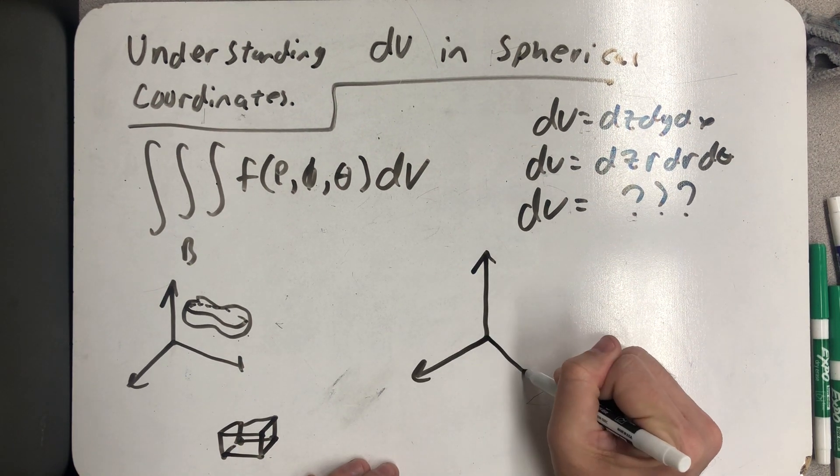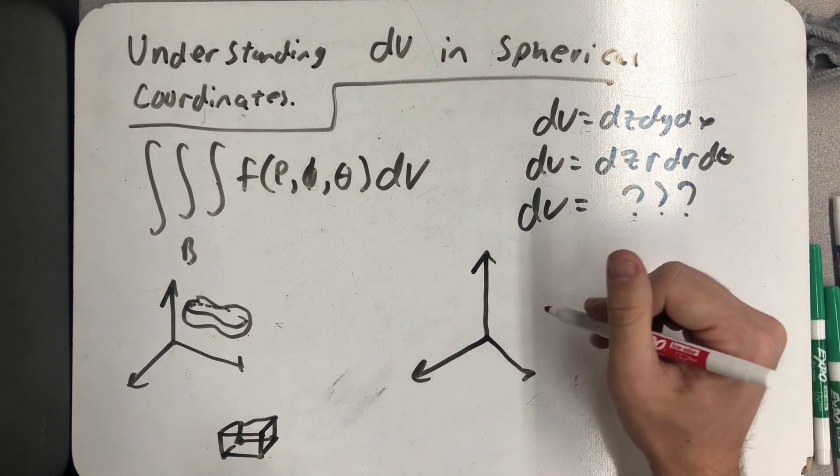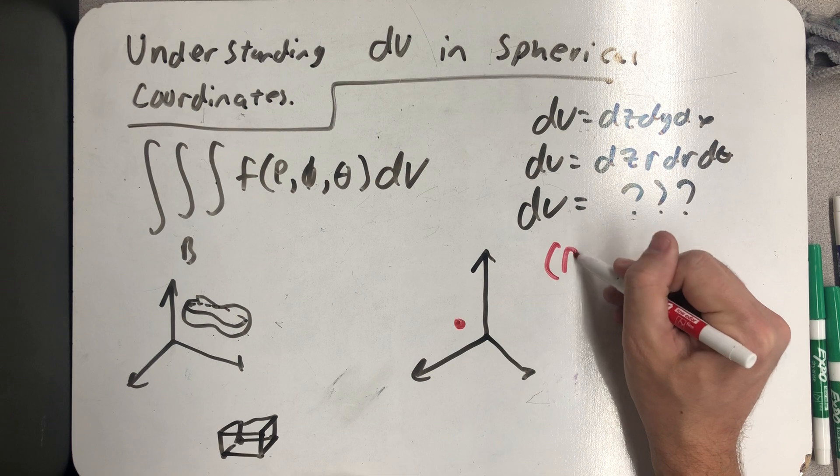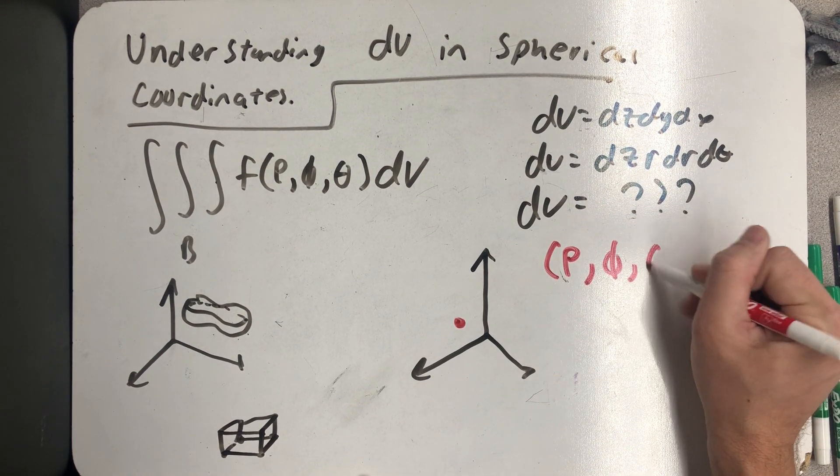All right, so let's imagine we have a point in spherical space plotted in spherical coordinates, and say it's right there. And let's say that's a ρ, φ, θ.